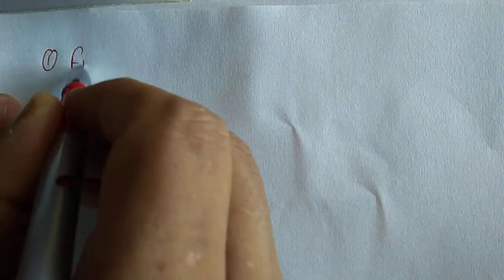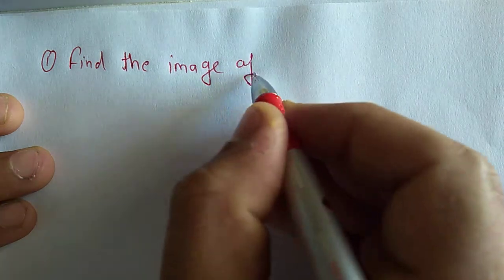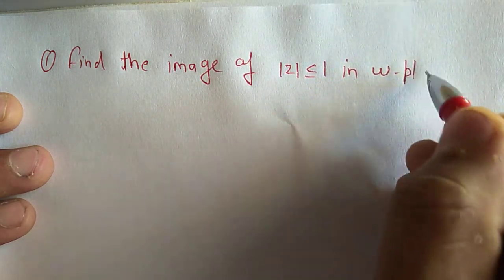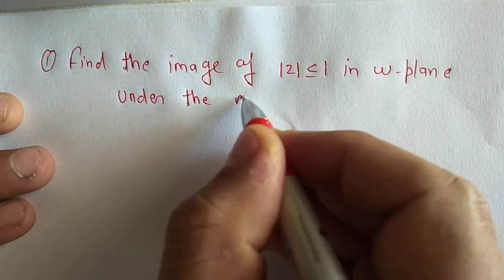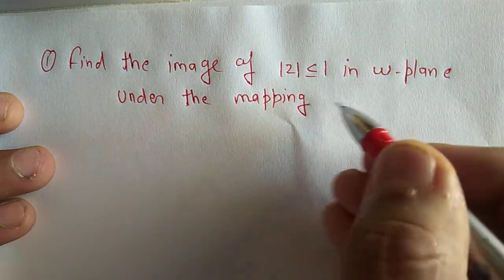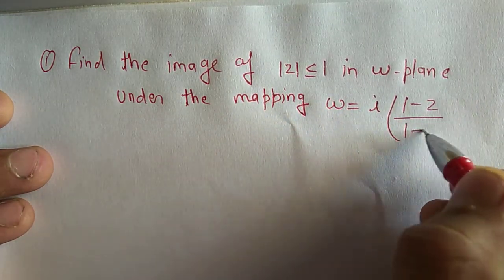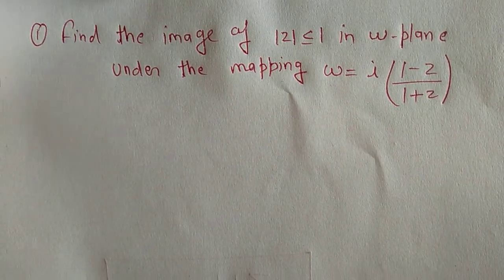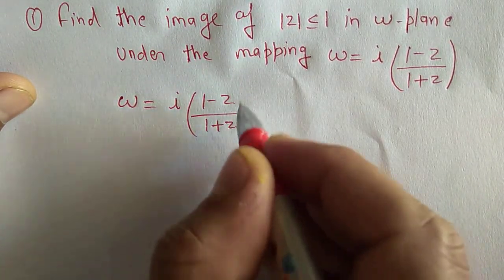The first question is: find the image of |z| ≤ 1 in the w-plane under the mapping w = i(1 − z)/(1 + z).